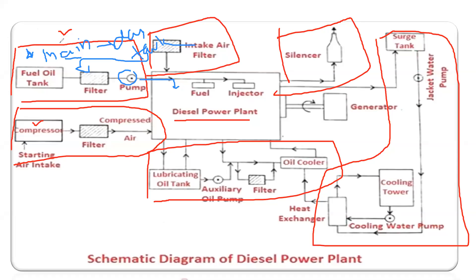We use the main tank and the day tank because in case your power demand increases, to fulfill the demand we use a backup power tank — that is your main supply or main tank. And this is your day tank. This is the procedure in the fuel oil system, or fuel supply system.